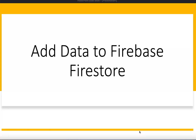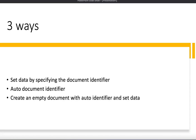In this video I'll show you how we can add data to Firebase Firestore. We have three ways to do it: the first one is to set data by specifying the document identifier; the second is to use an automatic document identifier where Firebase creates a unique identifier each time; and the third is to create an empty document with an automatic identifier and then set data to that empty document.